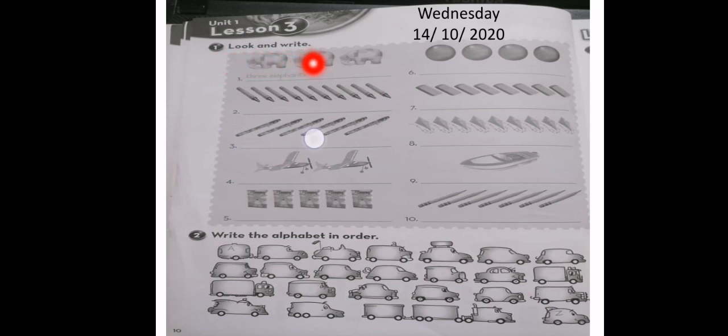Here, we have an exercise number one. Look and write. We should counting the picture. Then, you will write the number and what you are going to counting. On number one. I have how many elephants are there? One, two, three. Excellent. Three elephants. It's actually done.